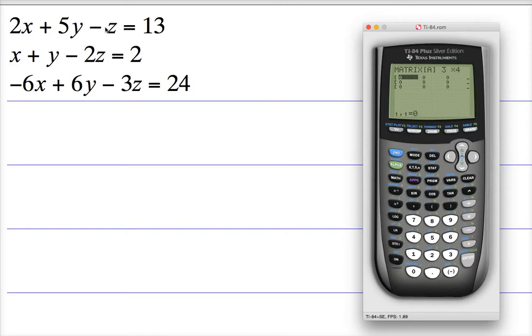Also, if one of them didn't have one of the variables, for instance, if the middle one said x minus 2z equals 2, and that plus y wasn't there, where the y is supposed to be in the column, so the second row in the second column, I would put a zero, because that variable isn't being represented in that equation.